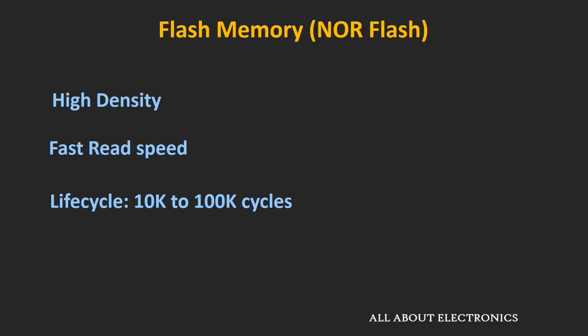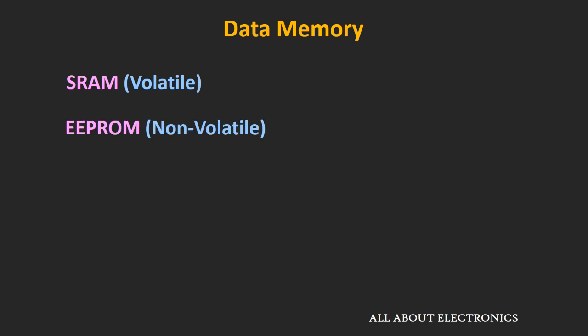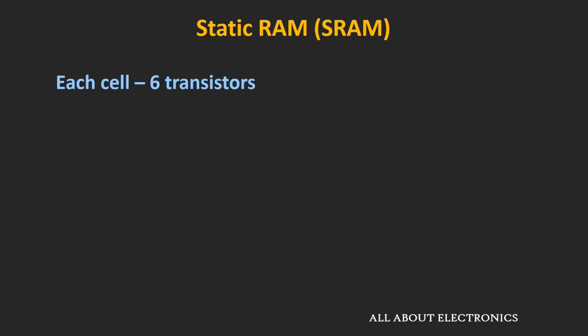Those are the reasons why flash memory is used as program memory inside the microcontroller. Now let's see the data memory. There are two types of data memory: SRAM and EEPROM. In static RAM, each memory cell consists of 6 transistors — 4 transistors are used to store the data and 2 transistors are used for control purposes. The reason for using static RAM as data memory is its fast read and write speed. In fact, SRAM is the fastest among all available memories today, which is why it is used not only in microcontrollers but also in computers as cache memory.